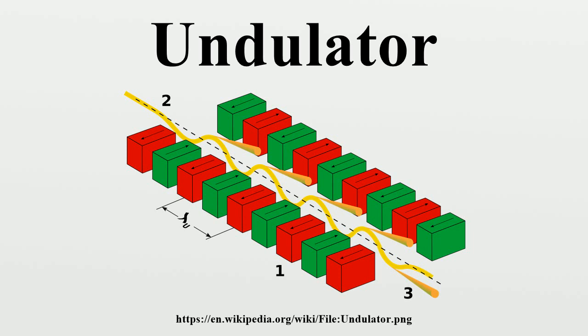In this regime of high field, the device is no longer called an undulator; it is called a wiggler. The usual description of the undulator is relativistic but classical.